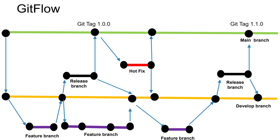Once the required features have been added, or when you feel it is the right time to release, you will create a release branch. In the release branch you will do testing — if you find any issues you will fix only those bugs in the release branch; you won't add any additional features once the release branch has been created. Once everything has been tested, you will deploy to your environments and merge the release branch changes into both the main branch and the develop branch, since you may have made bug fixes in the release branch. In the main branch a tag will be created to mark the version.